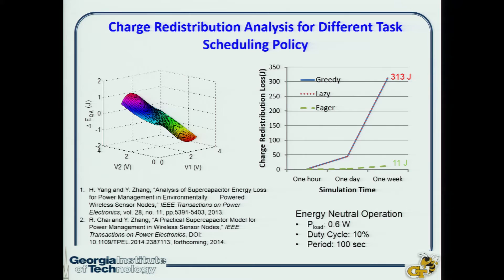we can save about 300 joules of energy for a sensor node with a 10% duty cycle. This energy saving is from charge distribution alone. If you also include the energy saving from self-discharge, it will be even more significant. This energy can be used to perform more tasks and improve the quality of service of the system.